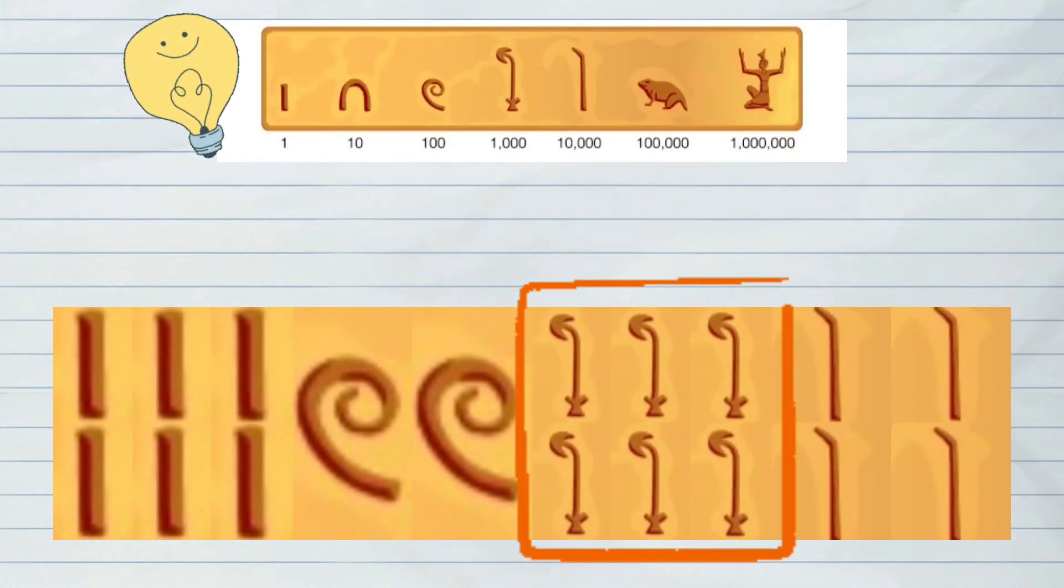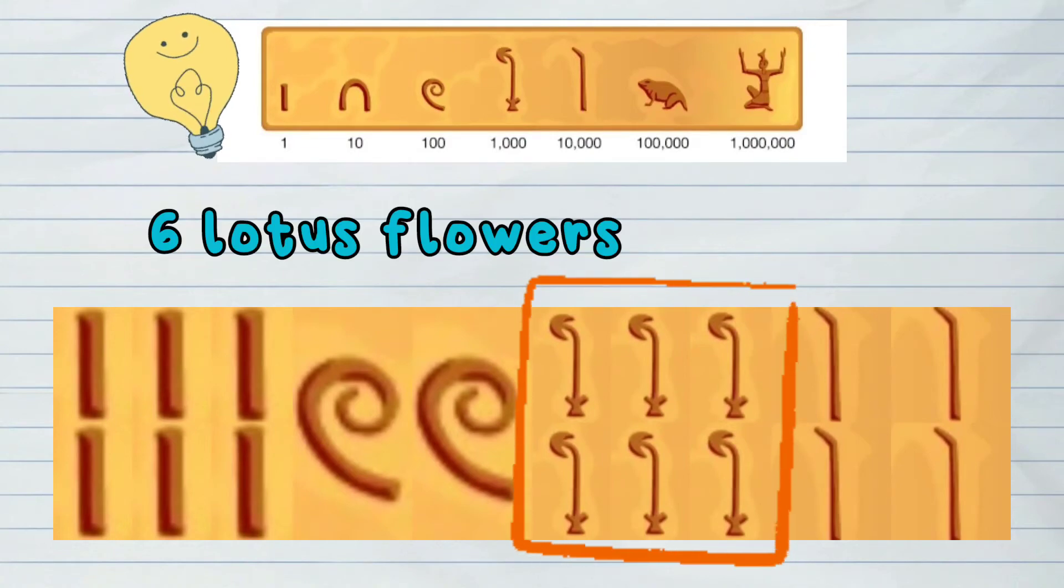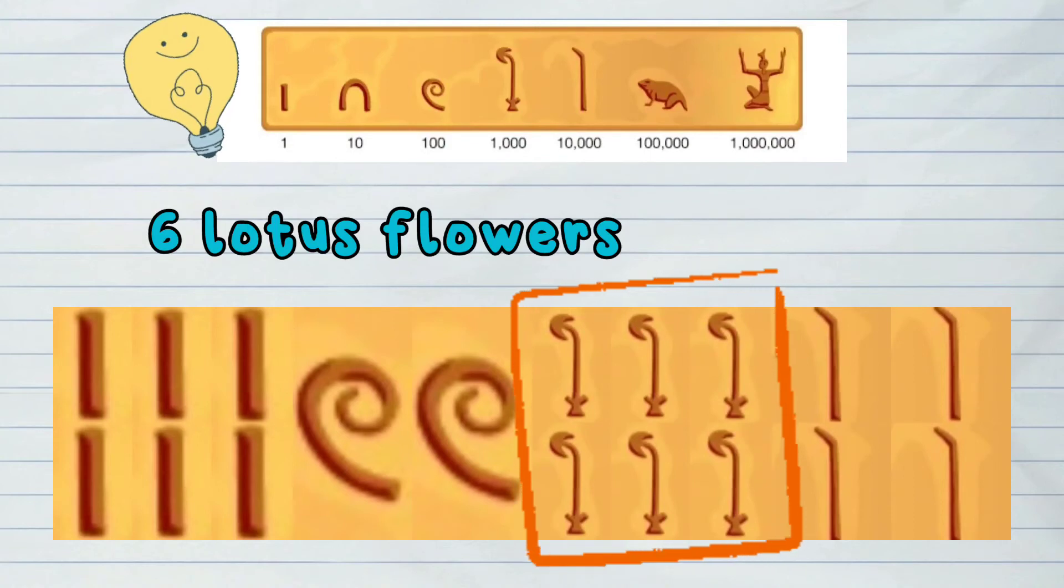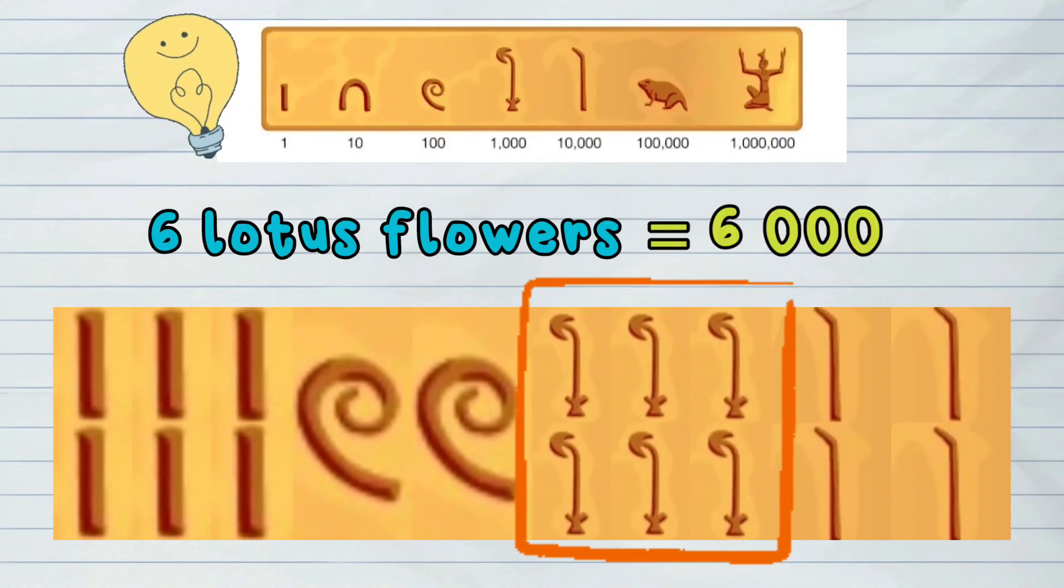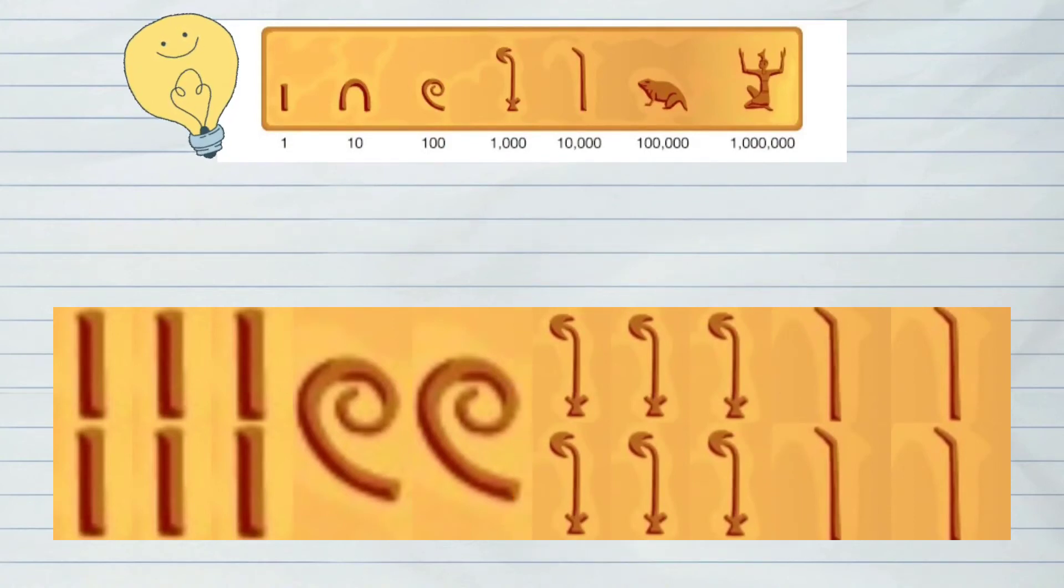Then the 6 lotus flowers, which is equivalent to 1,000 each. So this makes 6,000.